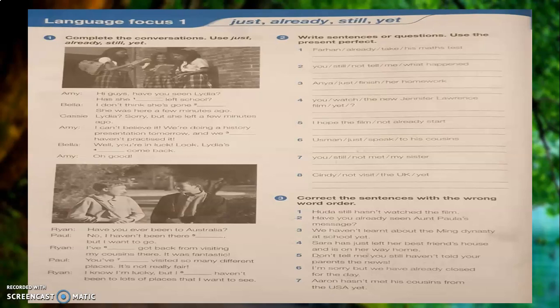Moving to question number 2: write a sentence or question using the present perfect. You are going to solve question number 2 with the help of the present perfect. If your sentence ends with a question mark, you will write a question; if it ends with a full stop, you will write a statement. For example, number 1: Farhan already take his maths test becomes — Farhan has already taken his maths test. You will solve the other sentences in the same way.